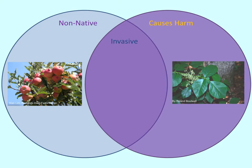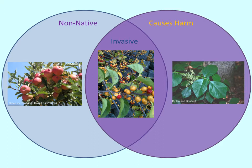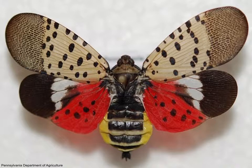On the other hand, poison ivy, as many of you know, grows aggressively and can cause harm, but it is a native species, so it would not be considered an invasive. Oriental bittersweet is not native and can take out our native species — it checks both boxes and is considered an invasive.